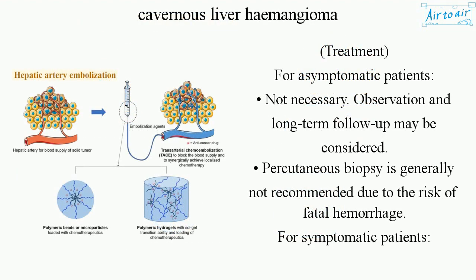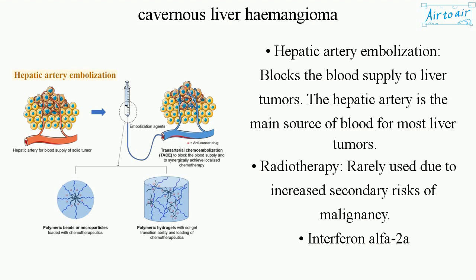For asymptomatic patients, treatment is not necessary; observation and long-term follow-up may be considered. Percutaneous biopsy is generally not recommended due to the risk of fatal hemorrhage. For symptomatic patients, hepatic artery embolization blocks the blood supply to liver tumors, as the hepatic artery is the main source of blood for most liver tumors.